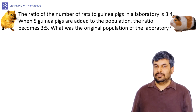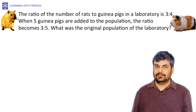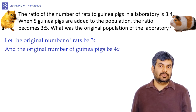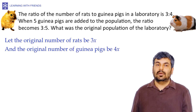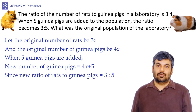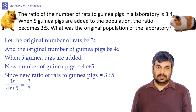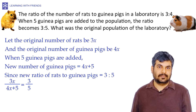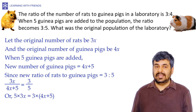To solve this, we assume variables. Since the ratio of rats to guinea pigs in the original population is 3:4, let the original number of rats be 3x and the original number of guinea pigs be 4x. When 5 guinea pigs are added, the new number of guinea pigs becomes 4x + 5. The new ratio is given as 3:5, giving the equation 3x / (4x + 5) = 3/5.